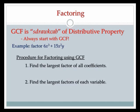GCF, or Greatest Common Factor, is the backwards of the distributive property. You guys have done distributive property a whole bunch of times in your life, and this is just doing it in reverse. We're going to always start with GCF — any time we ever do any factoring problem, we're always going to start with GCF.